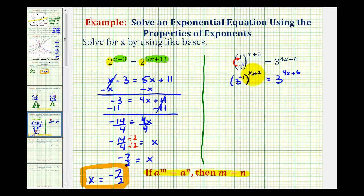Now here we have a power raised to a power, which means we can multiply these exponents. So we can write this as 3 raised to the power of negative 1 times the quantity x plus 2, equals 3 raised to the power of 4x plus 6.